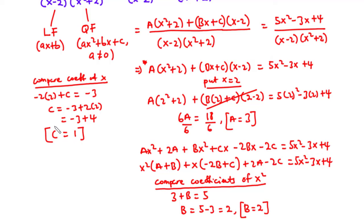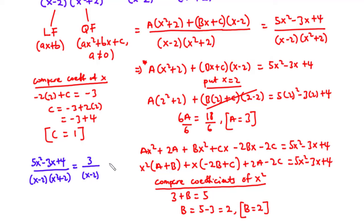Therefore the rational function (5x squared minus 3x plus 4) divided by (x minus 2)(x squared plus 2) is finally equal to 3 over (x minus 2) plus (2x plus 1) over (x squared plus 2). That's it for today's video, thanks for watching, see you in my next video, bye bye.